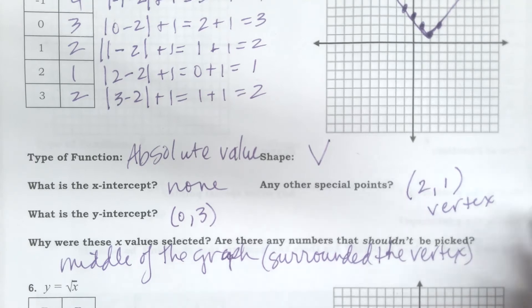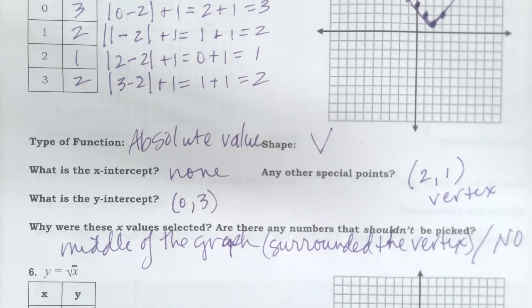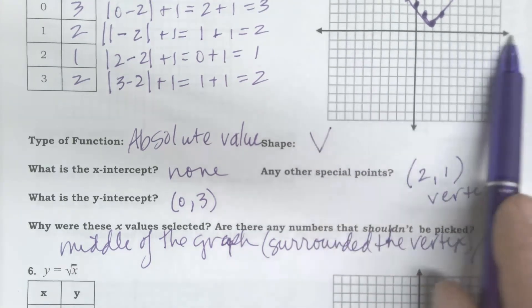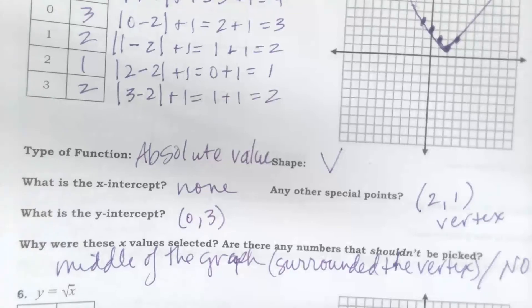Are there any values I couldn't pick that shouldn't be picked? No, none. I could have done anything. Could pick any values that fall on this graph. I could have picked all of them if I wanted to. Some of them are going to get me more information than others.